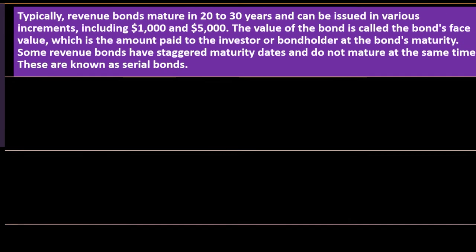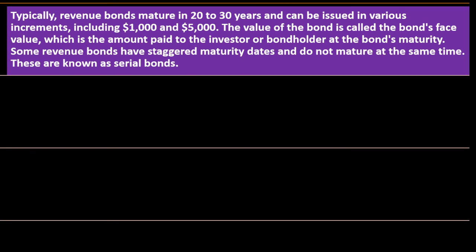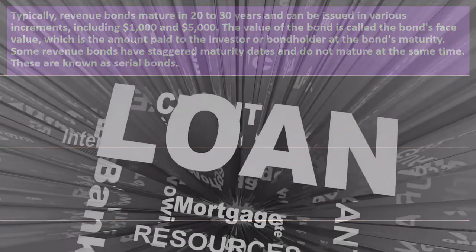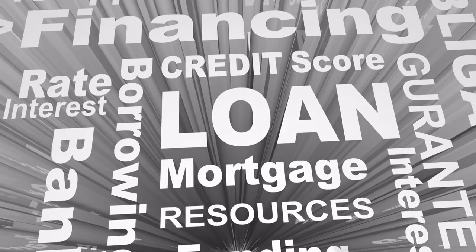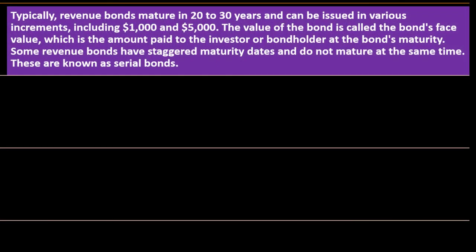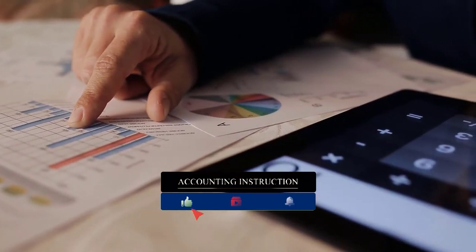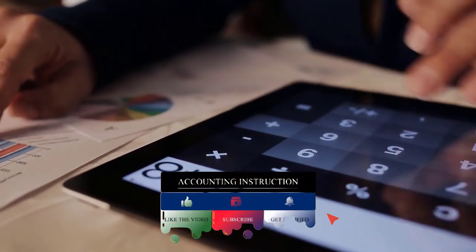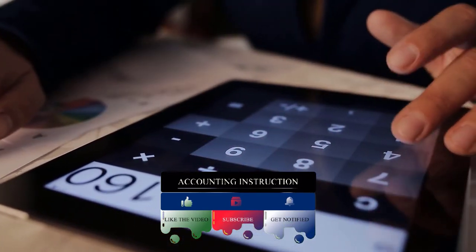Typically, revenue bonds mature in 20 to 30 years and can be issued in various increments, including $1,000 and $5,000. The value of the bond is called the bond's face value, which is the amount paid to the investor or bondholder at the bond's maturity. You'd be paying $1,000 or $5,000 and possibly earning interest on it, and then at the end you get your principal back — although a bond can be issued at a premium or discount, meaning you might actually pay more or less than the face amount.